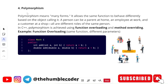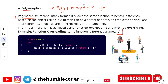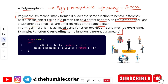The next pillar is polymorphism. The word polymorphism is made from two words — 'poly' and 'morphism' — where poly means many and morphism means forms. Polymorphism means many forms. It allows the same function to behave differently based on the object calling it. A person can be a parent at home, an employee at work, and a customer at a shop — all are different roles of the same person. In C++, polymorphism is achieved using function overloading and method overriding.